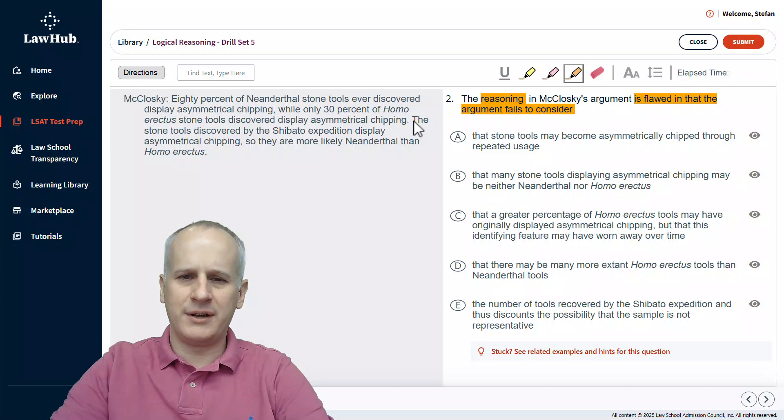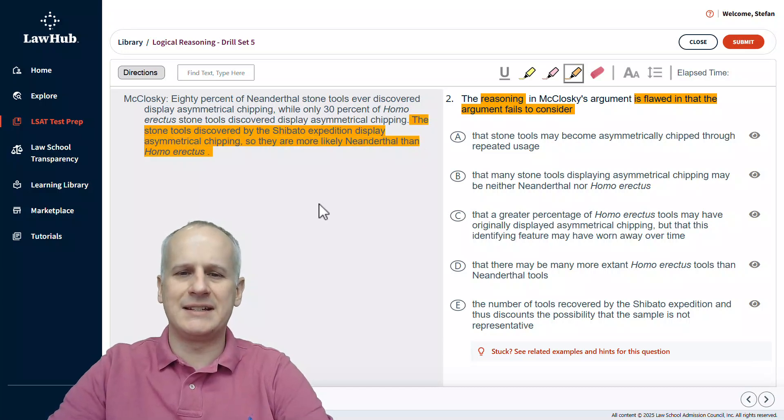We're going to have our conclusion just as this final sentence, stating that the stone tools discovered by the Shibato expedition display asymmetrical chipping, and that means they are more likely Neanderthal than Homo erectus. This probably does have one of the most common and most recognizable flaws that you should be able to predict.